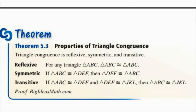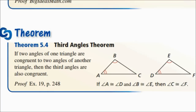Theorem 5.3, properties of triangle congruence, states that the reflexive, symmetric, and transitive properties still apply and can be used to solve proofs related to triangles. Theorem 5.4, the Third Angles Theorem, says that if you have two pairs of corresponding angles that are congruent to each other, then the third pair of angles must also be congruent, because angles in a triangle have to add up to 180 degrees.